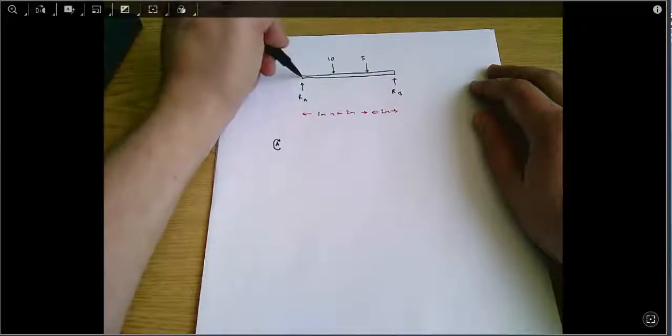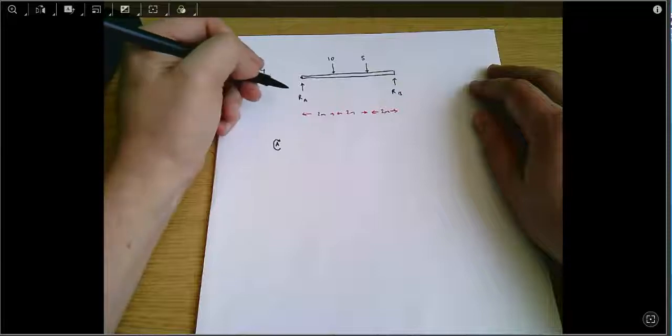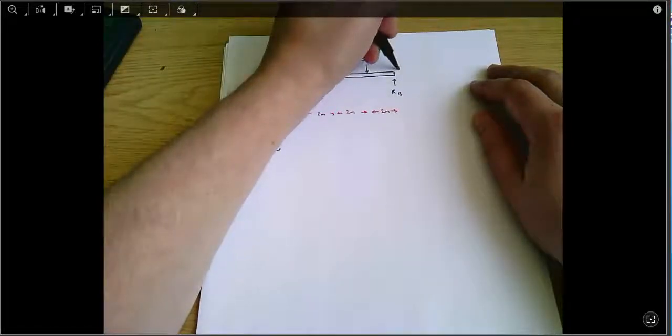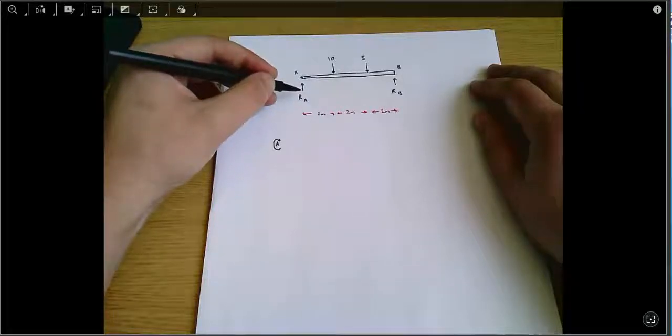Because we're interested in the moments about that point there at A, I'll just mark on that I'm calling that end A and that end B for complete clarity. This force doesn't have any effect—it goes straight through A, so it doesn't create a moment.